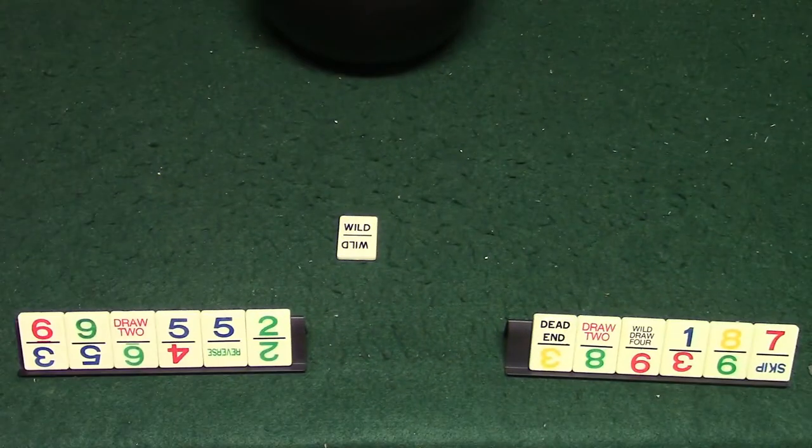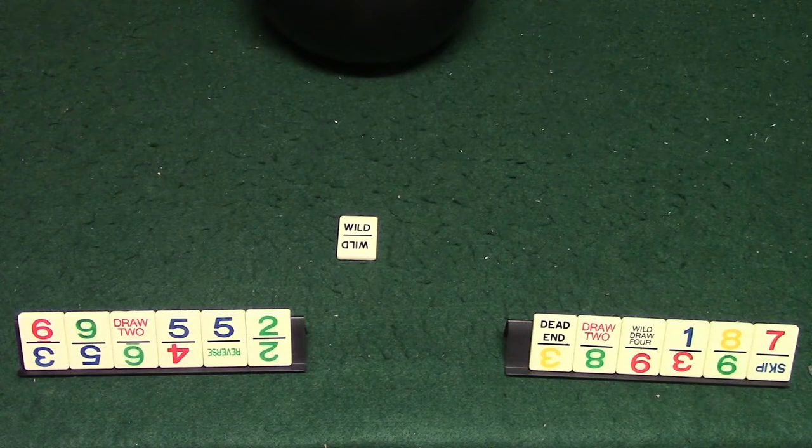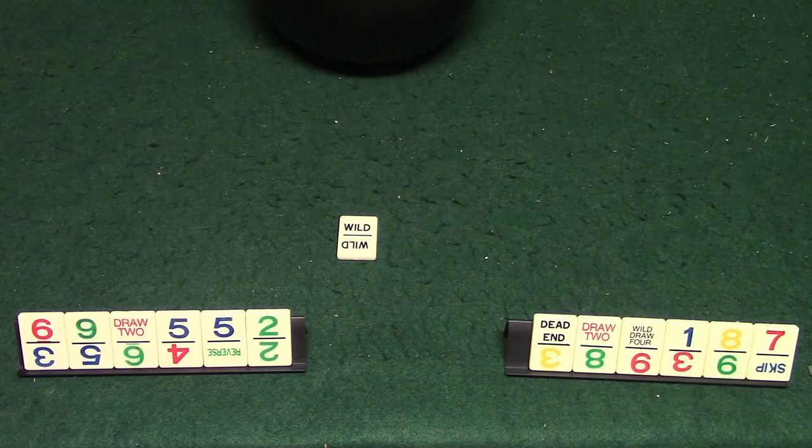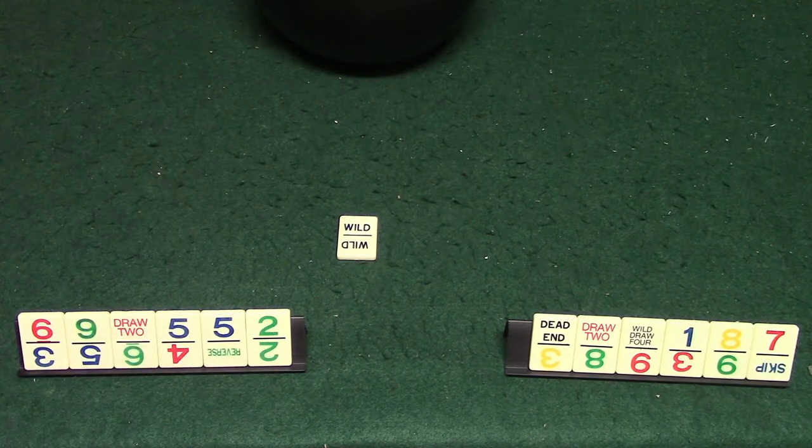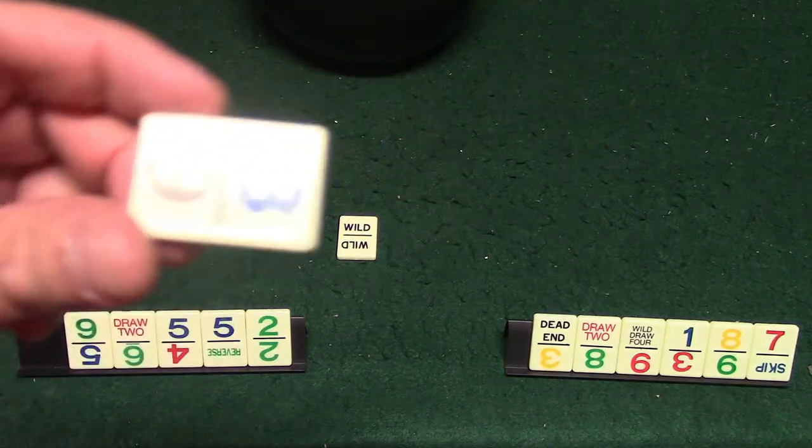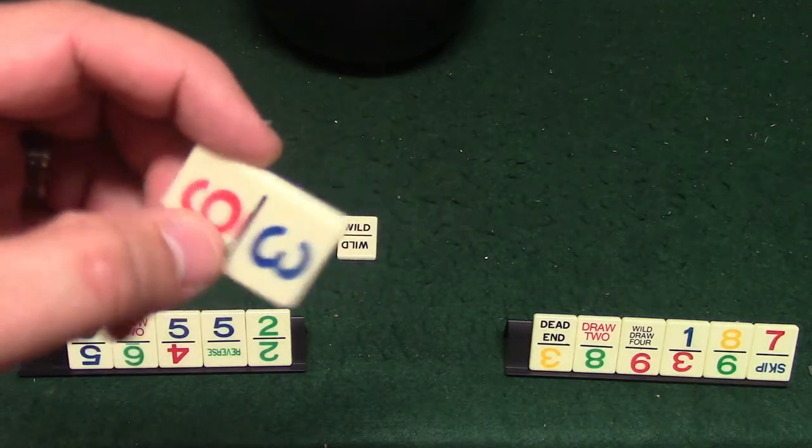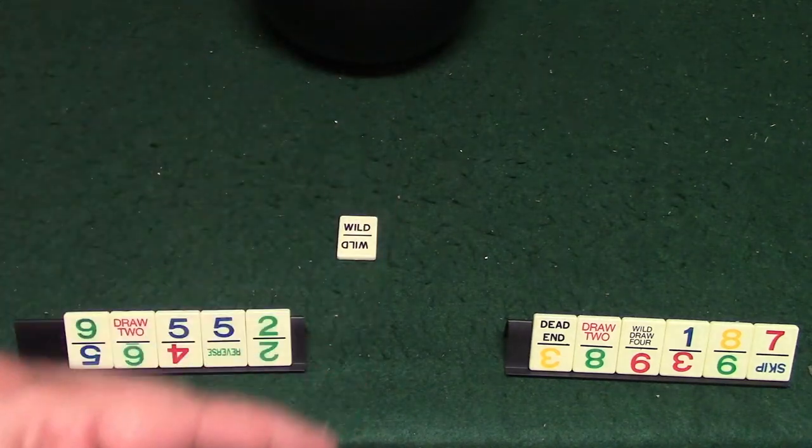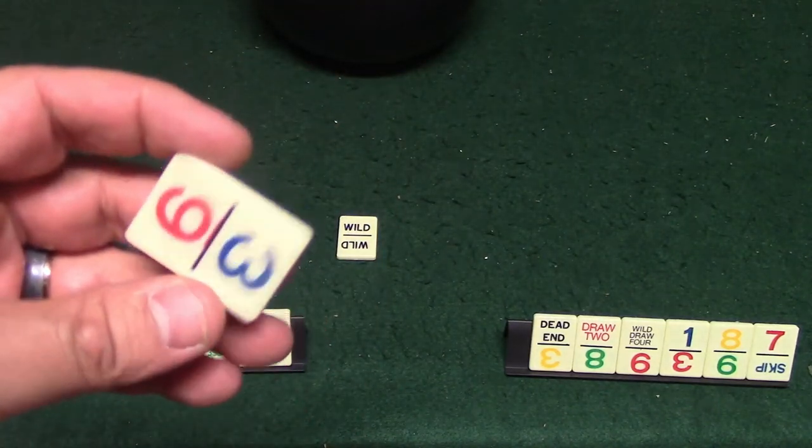Okay folks, what you're going to be doing in this game is you're going to be trying to get rid of all of your dominoes, and in the beginning everybody is going to draw six of them. I'll just show you a few of them right here. Here is a typical domino in Uno. It's going to have two different numbers and there are four different colors in this game: red, yellow, blue, and green.